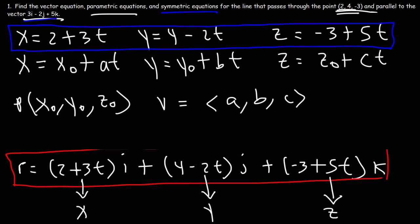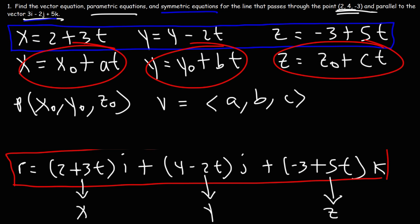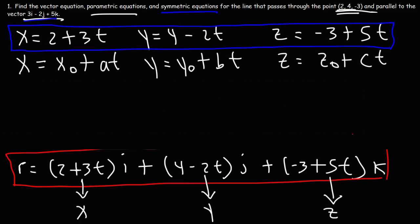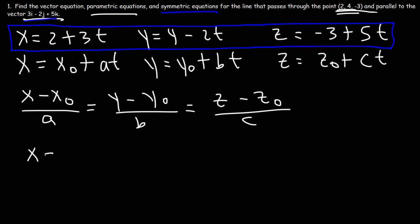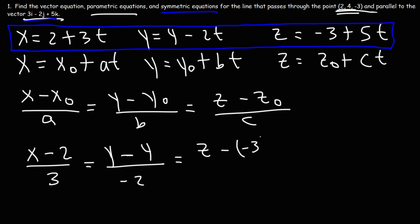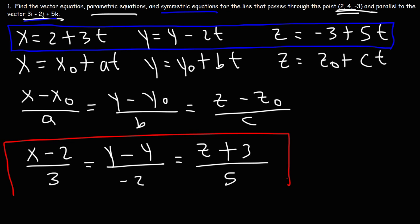For the symmetric equations, we eliminate the parameter by solving for t in each parametric equation and setting them equal. The formula is (x minus x0)/a equals (y minus y0)/b equals (z minus z0)/c. Substituting x0=2, a=3, y0=4, b=negative 2, z0=negative 3, and c=5, we get (x minus 2)/3 equals (y minus 4)/(negative 2) equals (z plus 3)/5. These are the symmetric equations.